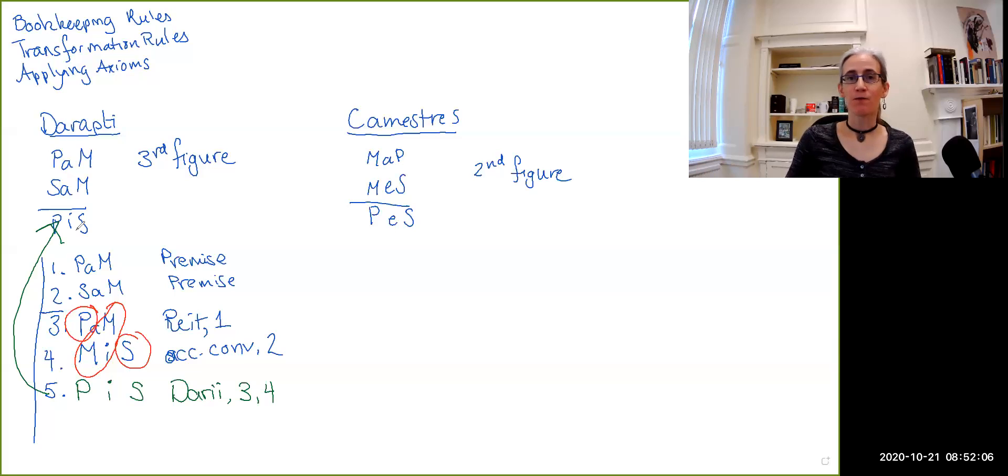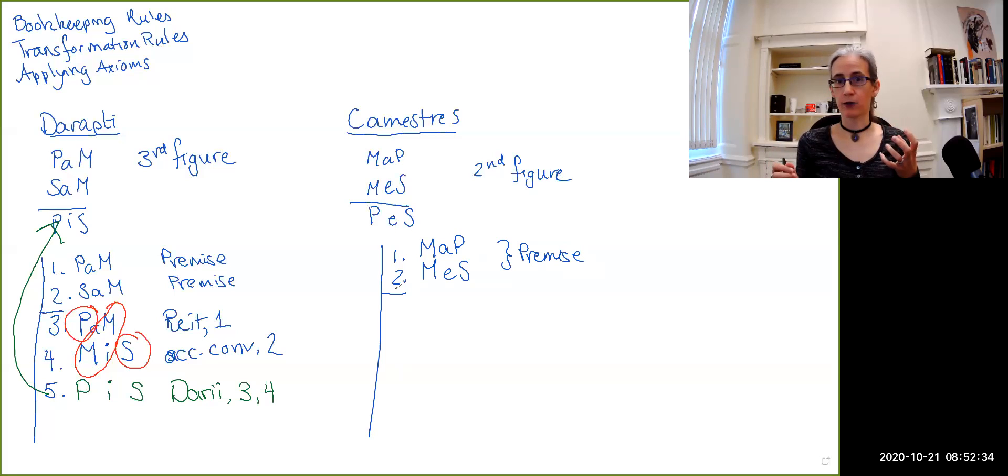So exactly the same setup: we know that we start off our proof by writing down the two premises. So there's our scope line. Line one: major premise MaP. Line two: minor premise MeS. And both of these get annotated with the rule premise and our little line underneath to set them off. Now we need to get an e claim for our conclusion with P as the subject and S as the predicate. This is what we have; this is what the schematic that I wrote up gets us.